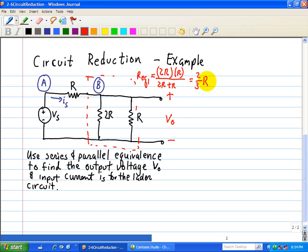Since we're trying to find V0, before we reduce the circuit even further to find IS, we need to do a voltage division. So V0 is equal to our input voltage, Vs. The voltage across this parallel resistor combination is just simply two-thirds R.